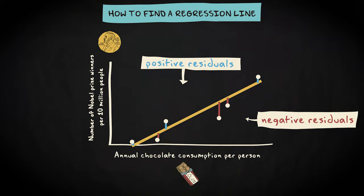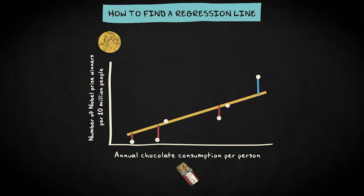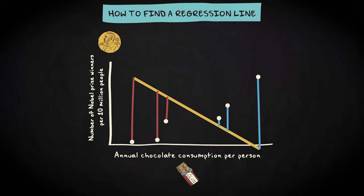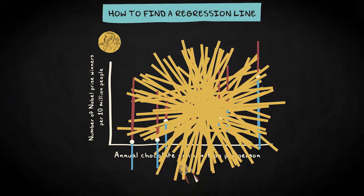You measure these residuals for every possible line through the scatterplot — not only for this line, but also for this line, for this line, and for every other possible line through the scatterplot.